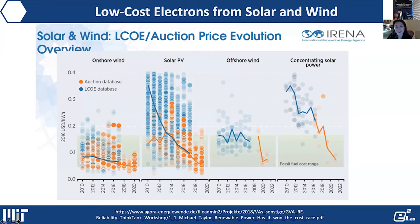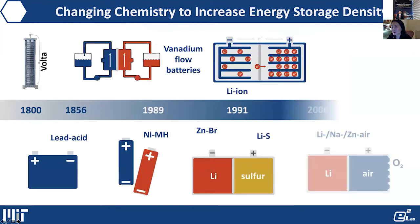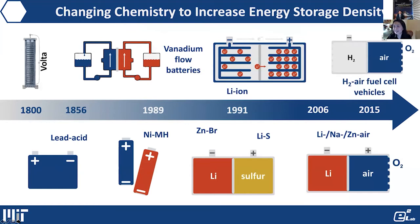Our transportation, our buildings, and our industry—although low-cost electrons from wind and solar can be as low as two cents per kilowatt hour, the stored electrons can be many orders of magnitude more expensive. If we think about the past two centuries, scientists and engineers have studied and discovered many different types of materials and chemistry to enhance energy density and lower stored electron cost.